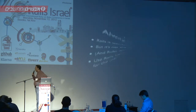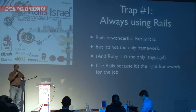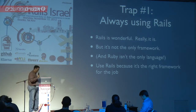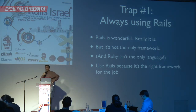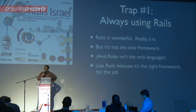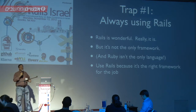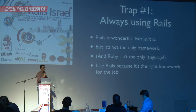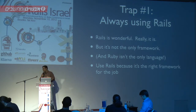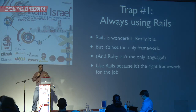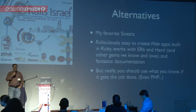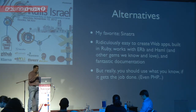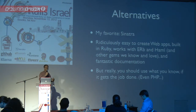The first trap I want to describe is always using Rails. There's a saying: if the only tool you have is a hammer, every problem looks like a nail. There are people who say, 'You need a web app? Thus you must use Rails.' That is often true, but not always. It's not the only framework, and Ruby is not the only language. You should use Rails because it's the right tool for the job. Staying in the Ruby community, my favorite alternative is Sinatra. I redid my company website a few weeks ago — all I needed was contact information and testimonials, so Sinatra was simpler, smaller, and faster to work with.